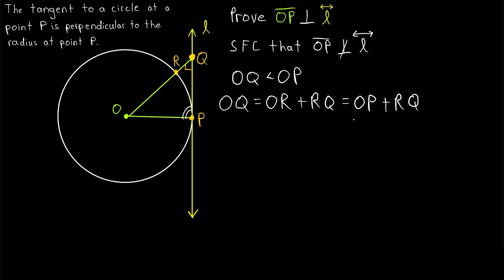But then the problem, of course, is that this quantity is greater than OP, because it's OP plus some other amount. And we know that the measure of RQ has to be greater than zero.